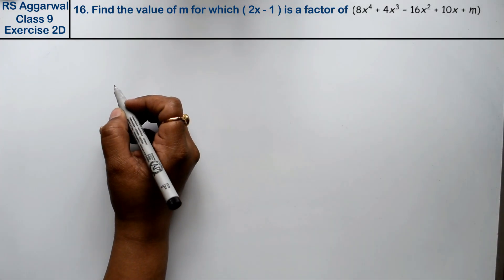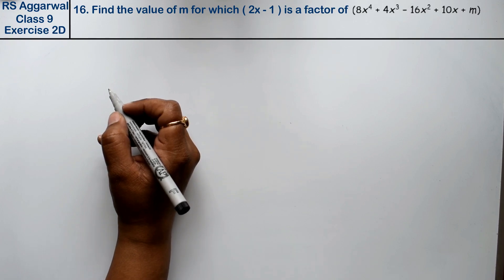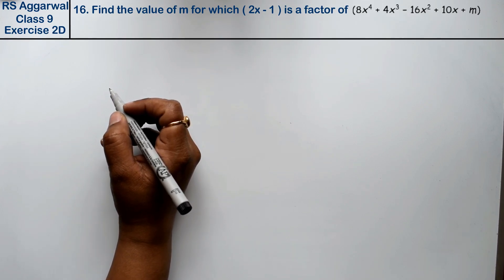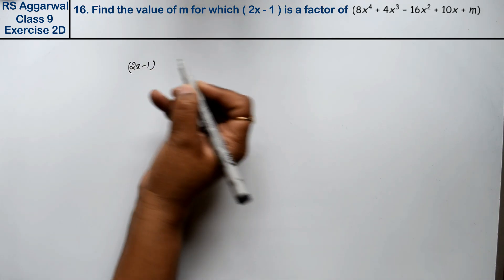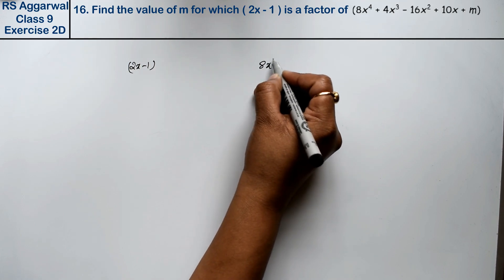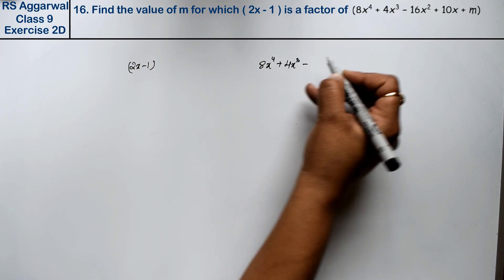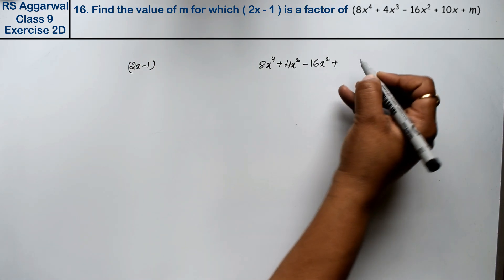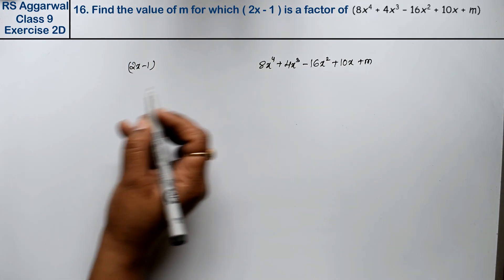Let's do question number 16 of exercise 2D, a polynomial question. Find the value of M for which 2x minus 1 is a factor of 8x to the power 4 plus 4x cube minus 16x square plus 10x plus M.